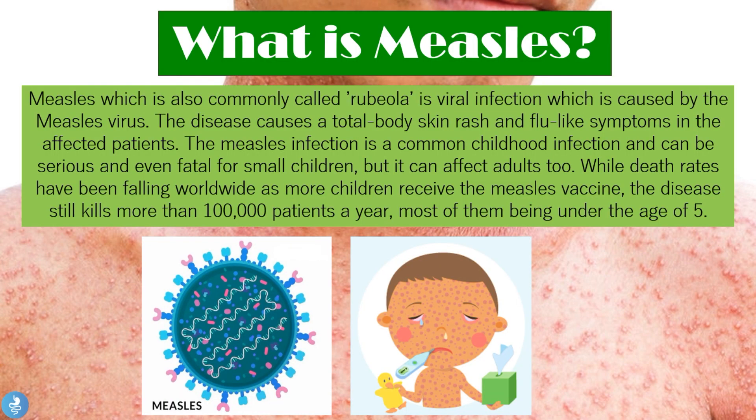So what is measles? Measles, which is also commonly known as rubeola, is a viral infection caused by the measles virus. The disease causes a total body skin rash and flu-like symptoms in affected patients. It is a common childhood infection and can be serious and even fatal for small children, but it can affect adults too. While death rates have been falling worldwide as more children receive the measles vaccine, the disease still kills more than 100,000 patients each year, most of them being under the age of five.